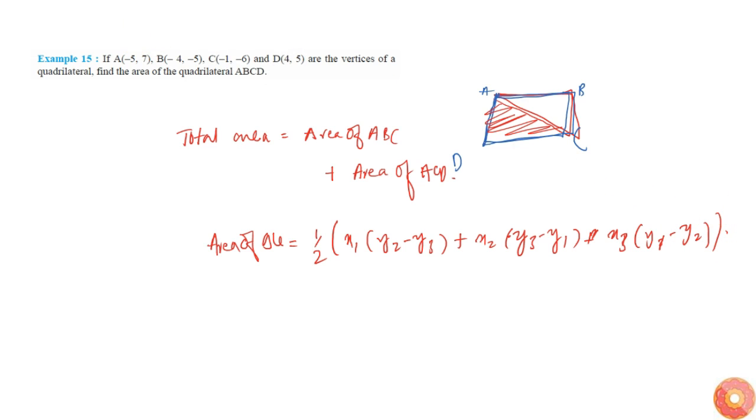So I will just put the values here. Area of triangle ABC is equal to half into X1 is simply minus 5 into Y2 is minus 5 and Y3 is minus of minus 6 that is plus 6, plus X2, so X2 is simply minus 4 into Y3 is minus 6 and minus Y1 is 7...